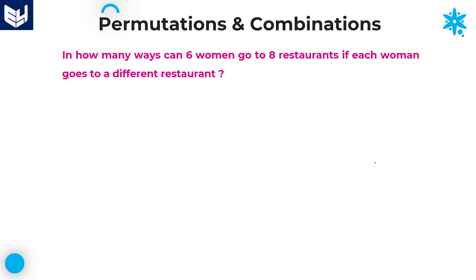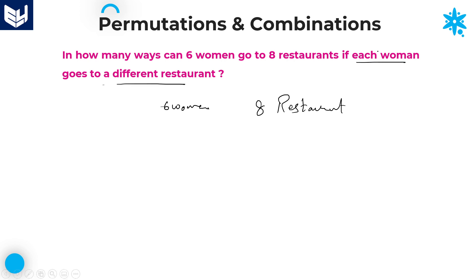Let's move on to the next question. In how many ways can six women go to eight restaurants, if each woman goes to a different restaurant? According to the condition, we take individual values for each woman: first, second, third, fourth, fifth, and sixth.